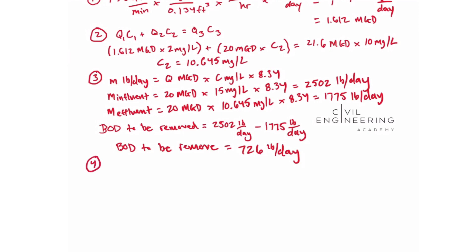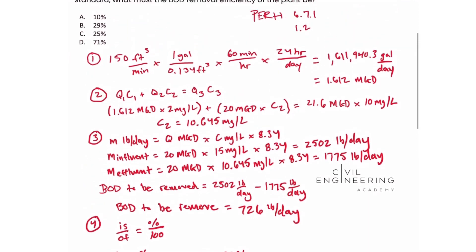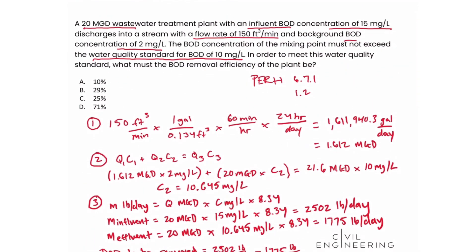Step 4 is determining the removal efficiency percentage. Using the is-over-of equals percent-over-100 equation, we want to know what percent of 2,502 pounds per day is 726 pounds per day. Solving for that percentage, we get an answer of approximately 29.033%. Scrolling up to look at our answer choices, we see that this is answer choice B: 29%.